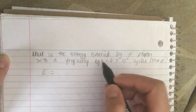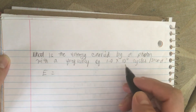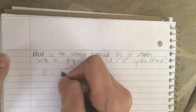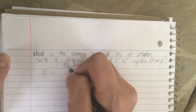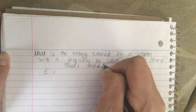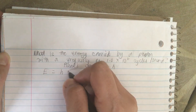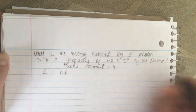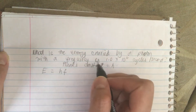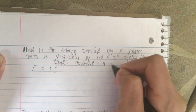What is the energy carried by a photon with a frequency of 1.0 times 10 to the 6 cycles per second? The energy is equal to Planck's constant — called H — times the frequency. They give us the frequency, so we need Planck's constant H.